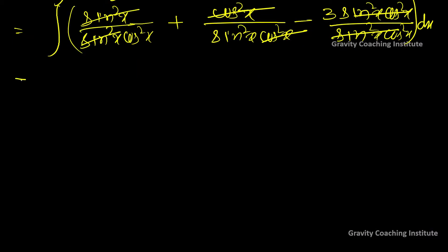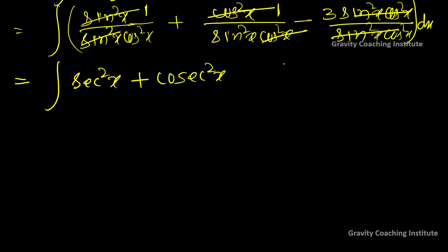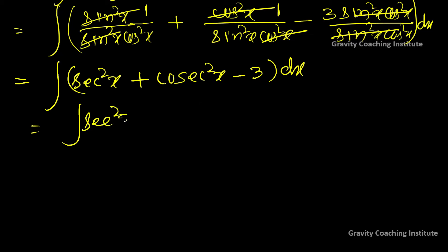और इसमें sin²x और sin²x cancel होगा, cos²x और cos²x cancel होगा। Equal to integration: 1/cos²x को लिख सकते हैं sec²x, plus 1/sin²x को लिखेंगे cosec²x, minus 3 dx. So equal to integration sec²x dx + integration cosec²x dx - integration 3 dx.